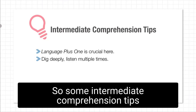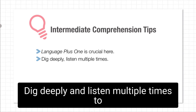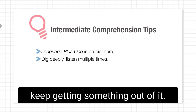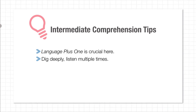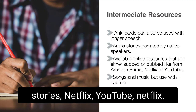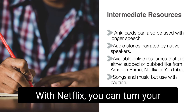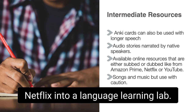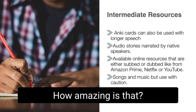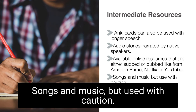Some intermediate comprehension tips: language plus one is crucial. Dig deeply and listen multiple times to keep getting something out of it. Intermediate resources include Anki cards, audio stories, Netflix, and YouTube. There's a great plugin called Language Learning with Netflix — you can turn your Netflix into a language learning lab. Songs and music are also a resource, but used with caution.